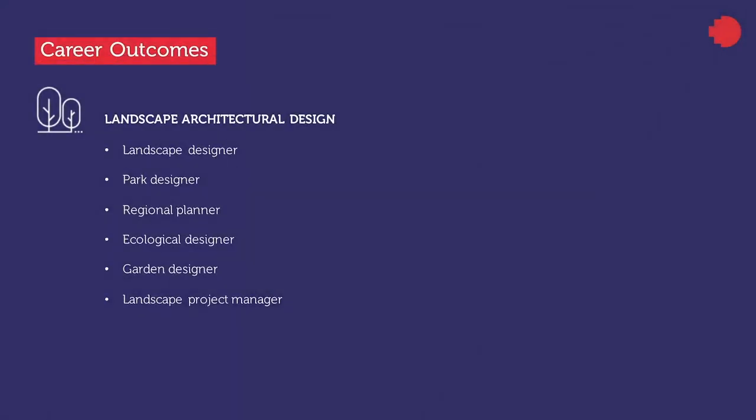After achieving your Bachelor of Landscape Architectural Design, you are able to work as a landscape designer, a park designer, in a regional planning office, in ecological design, or start your own practice as a garden designer. You can go into project management with design skills under your belt — particularly landscape project management and landscape management. It's also important to note that the Bachelor of Landscape Architectural Design is a pathway program into the Masters of Landscape Architecture, which is a fully accredited program within the Australian Institute of Landscape Architects. At the conclusion of the Masters, you can be admitted to the Institute as a landscape architect, which allows you to practice in whatever form you like across a very broad practice forum.